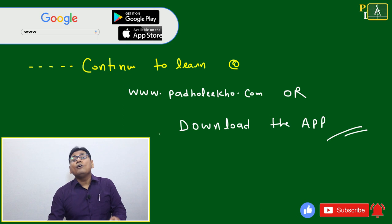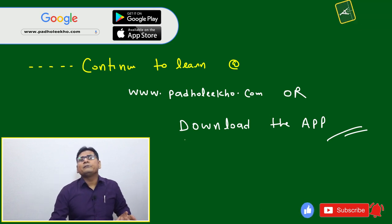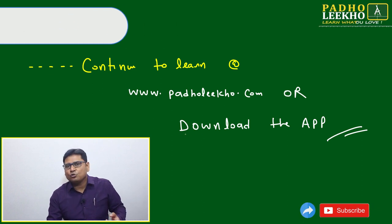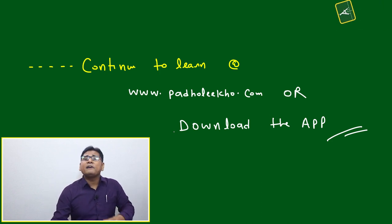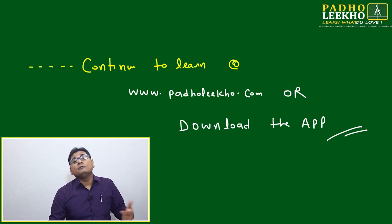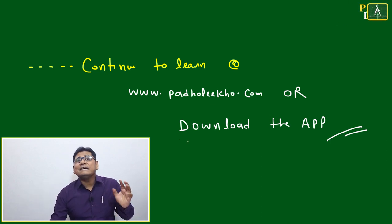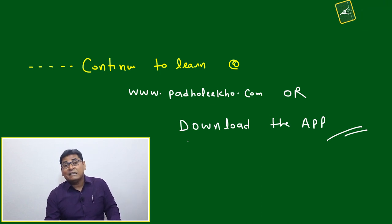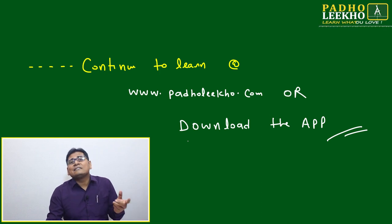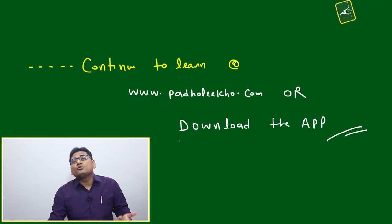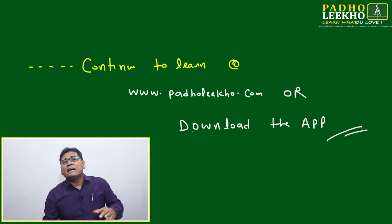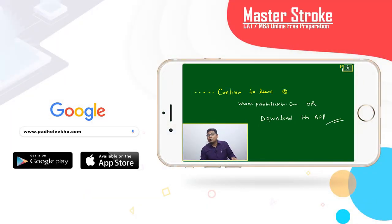VLD — Vertical Line Diagram — is one of the most important tools for DI. It is widely used for solving CAT, mock CAT, and MBA entrance exam questions. It is applicable to a variety of question types, not just one. This technique is easy, accurate, and highly time-saving. I recommend adopting this technique. Continue learning more techniques for DI, LR, Quant, and Verbal at www.paroliko.com or via the mobile app.